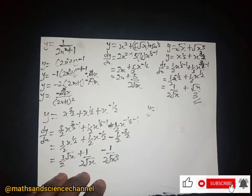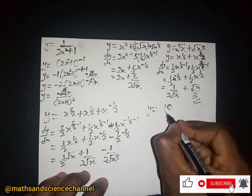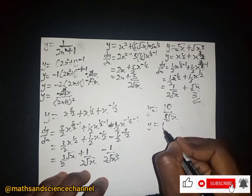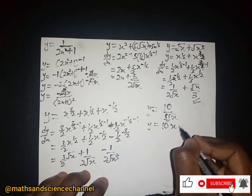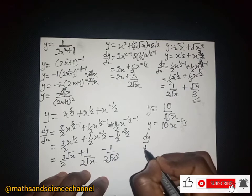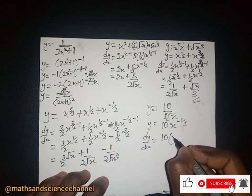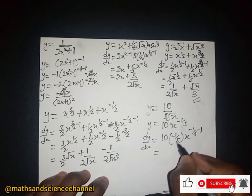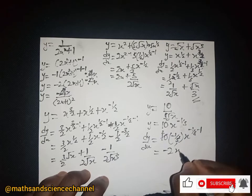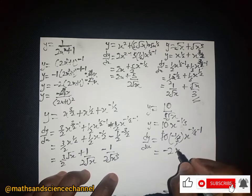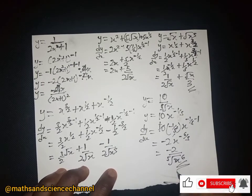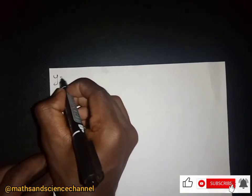Example: y equal to 10 divided by the fifth root of x. This can be written as 10 times x to the power negative 1/5. The dy/dx is — 10 multiplied by negative 1/5 then x to the power negative 1/5 minus 1 — which gives negative 2x to the power negative 6/5, written as negative 2 over the fifth root of x to the power 6.